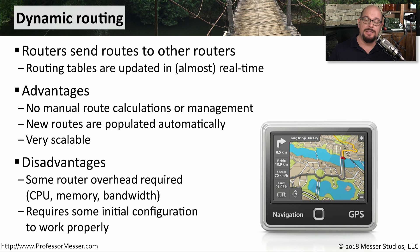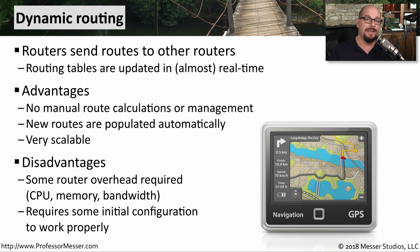Dynamic routing does have some disadvantages. It uses some bandwidth to send updates between the routers, and there's memory and CPU used inside the router to store this information. There's also some initial configuration that has to take place to send these dynamic routes between all of the different routers.